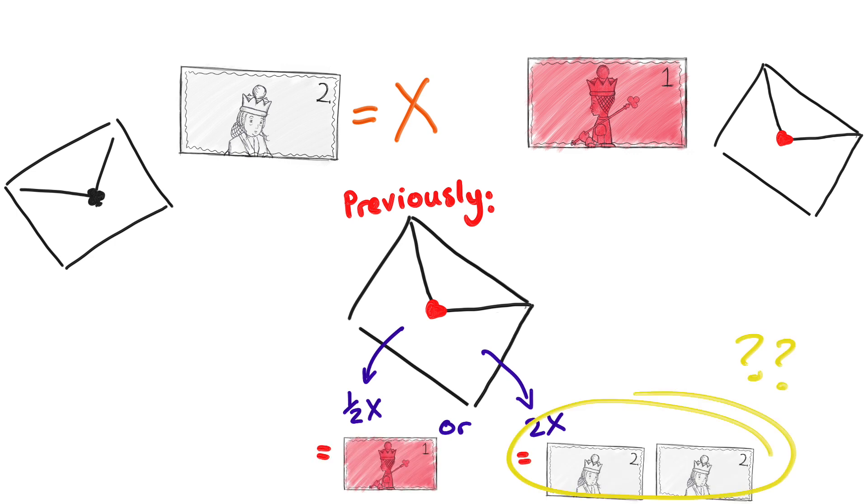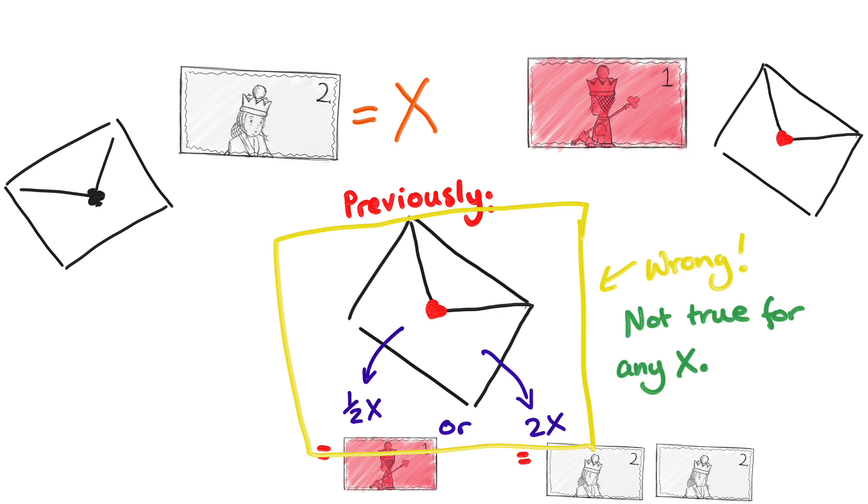So claiming that the other envelope contains either 2x or half x is wrong. What that's saying is, regardless of x, this is true about the other envelope's value. But what we can see from the two cases is, this is clearly not true for any value of x.